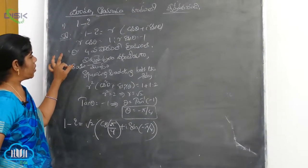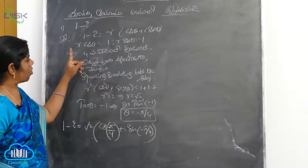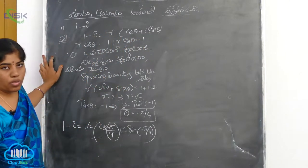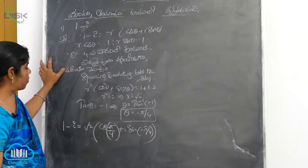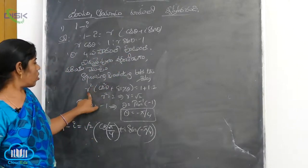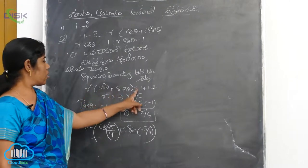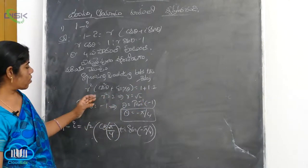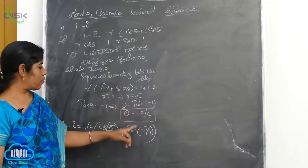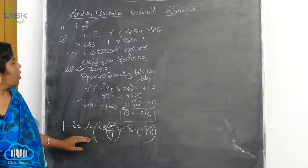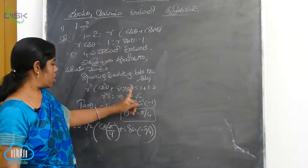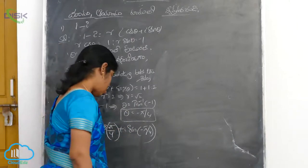So 1 minus i equals r cos theta plus i sin theta, where r cos theta equals 1 and sin theta equals minus 1. Squaring and adding gives R² equals 2.